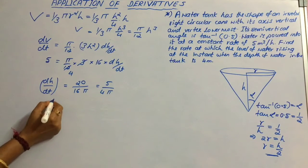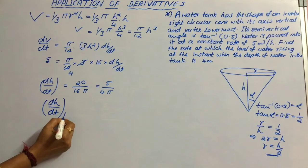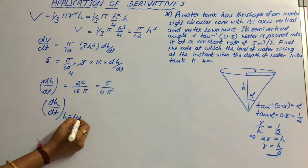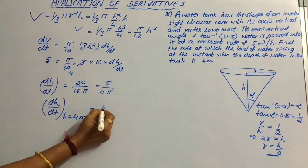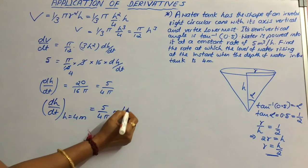For rate of change of depth of water, dh by dt when h is equal to 4 meters is equal to 5 by 4 pi meters per hour.